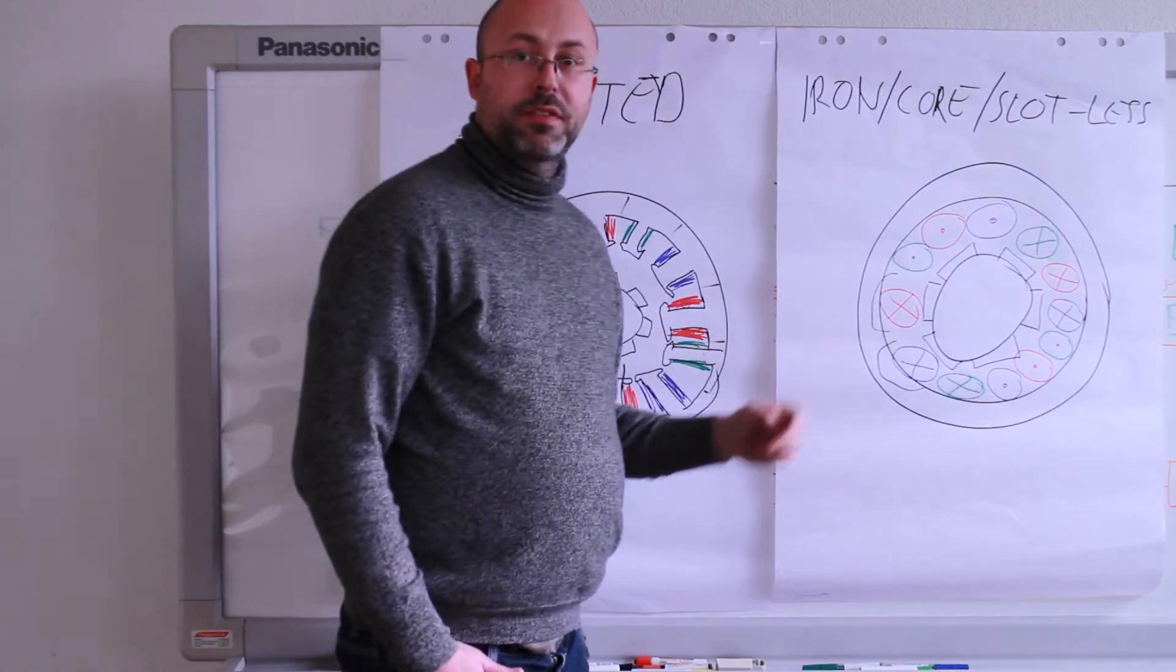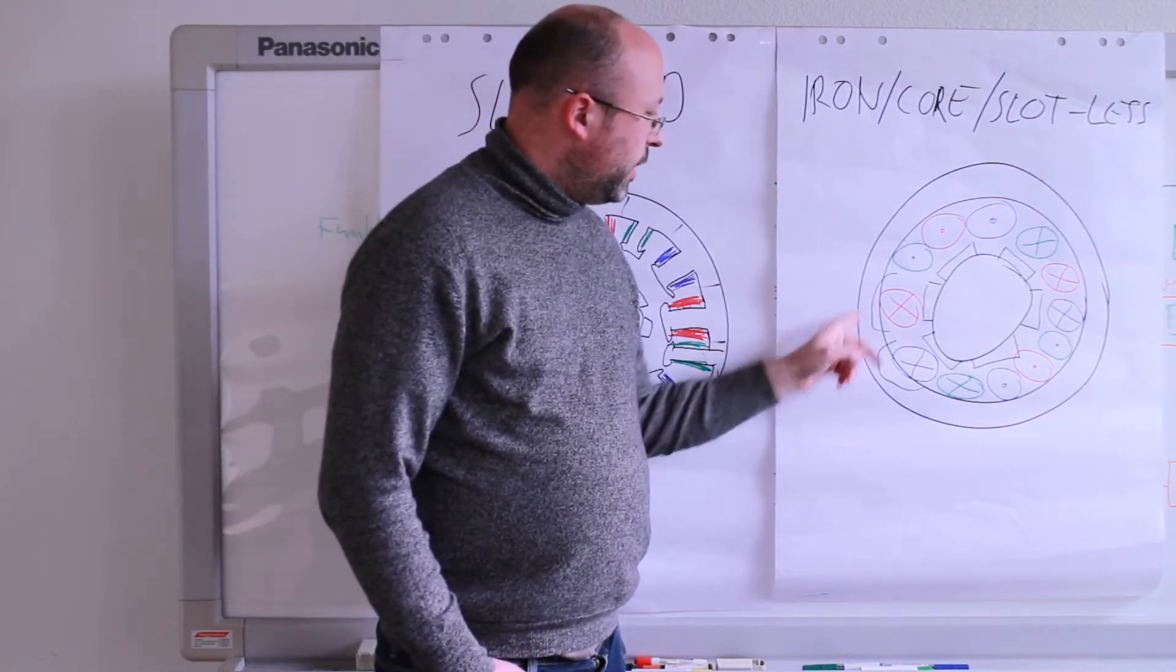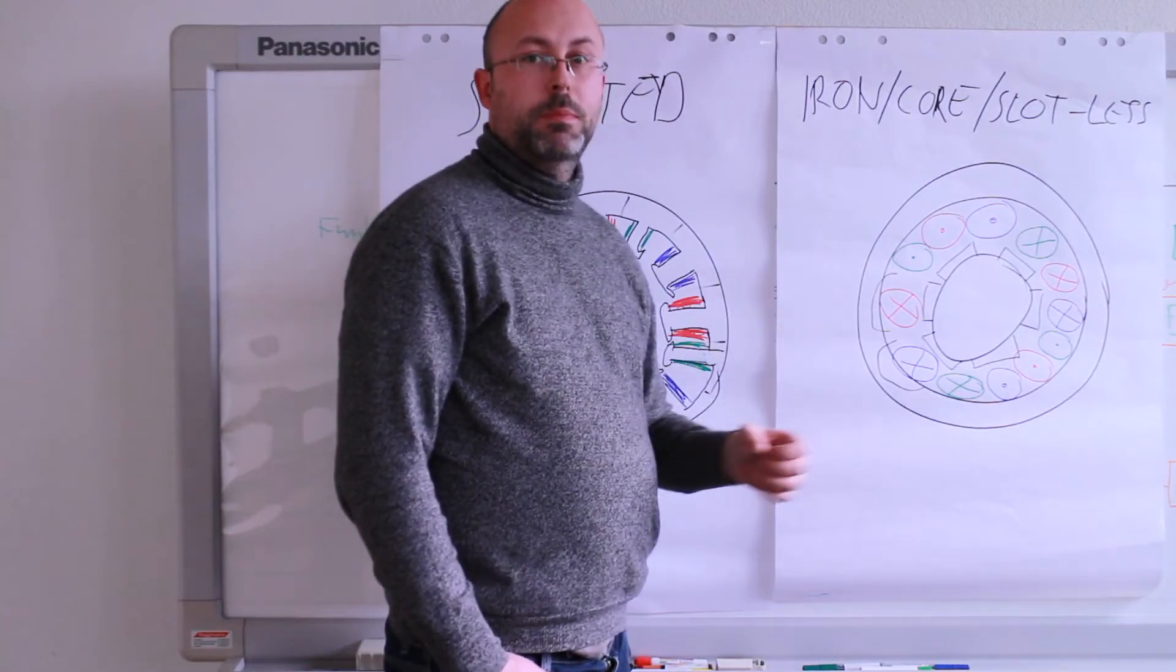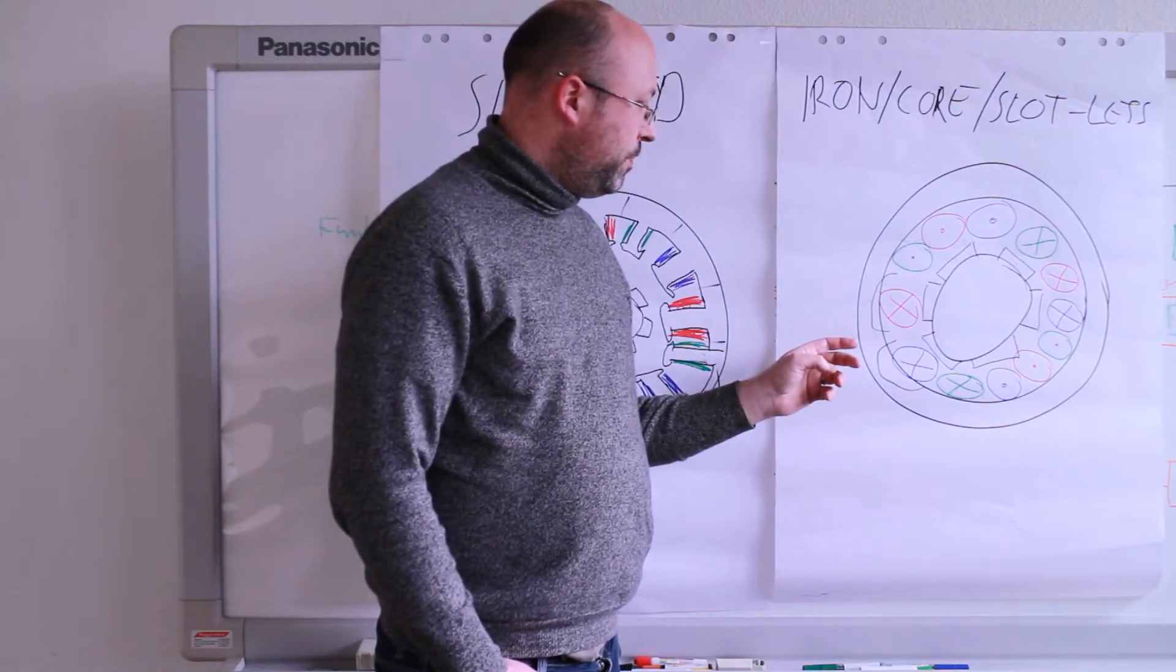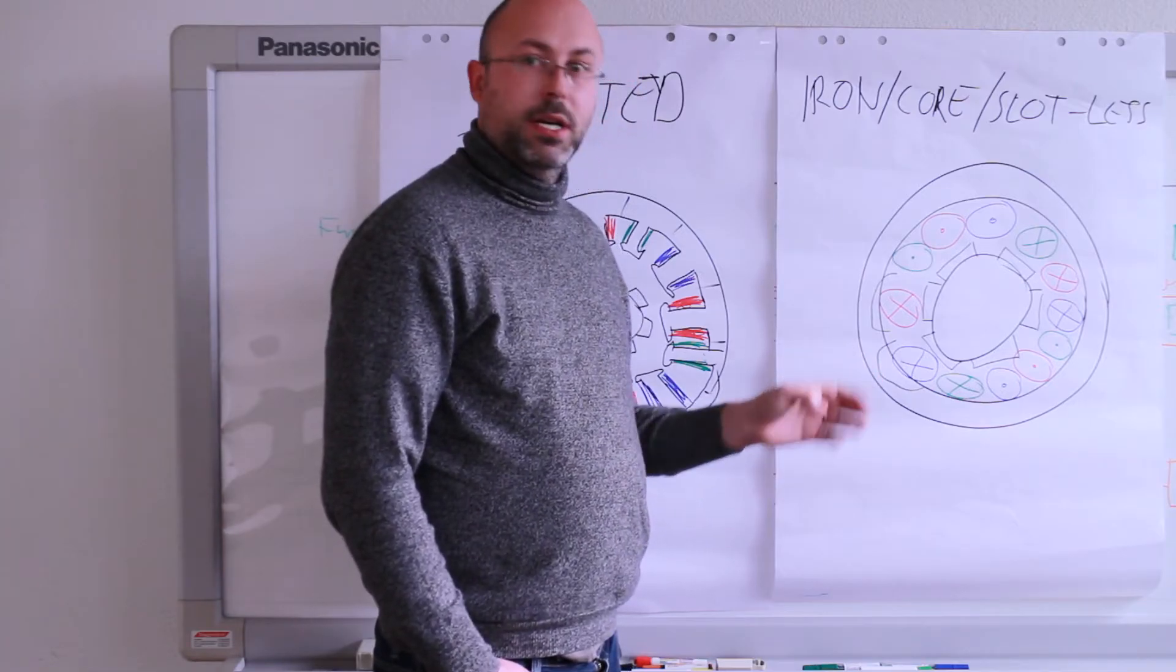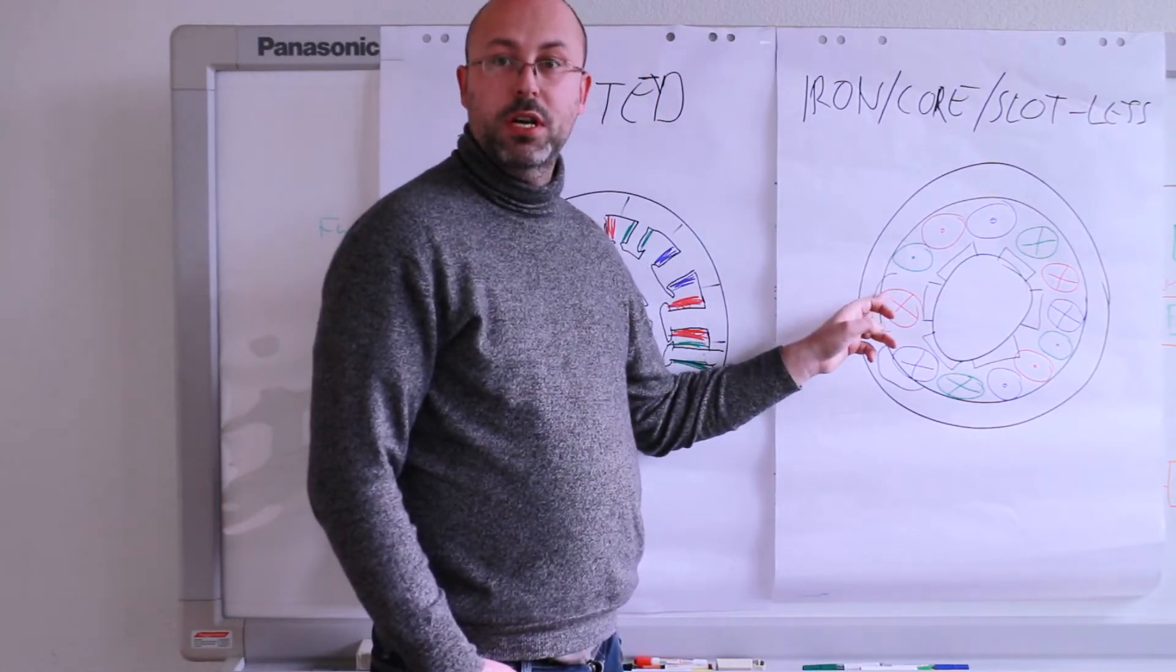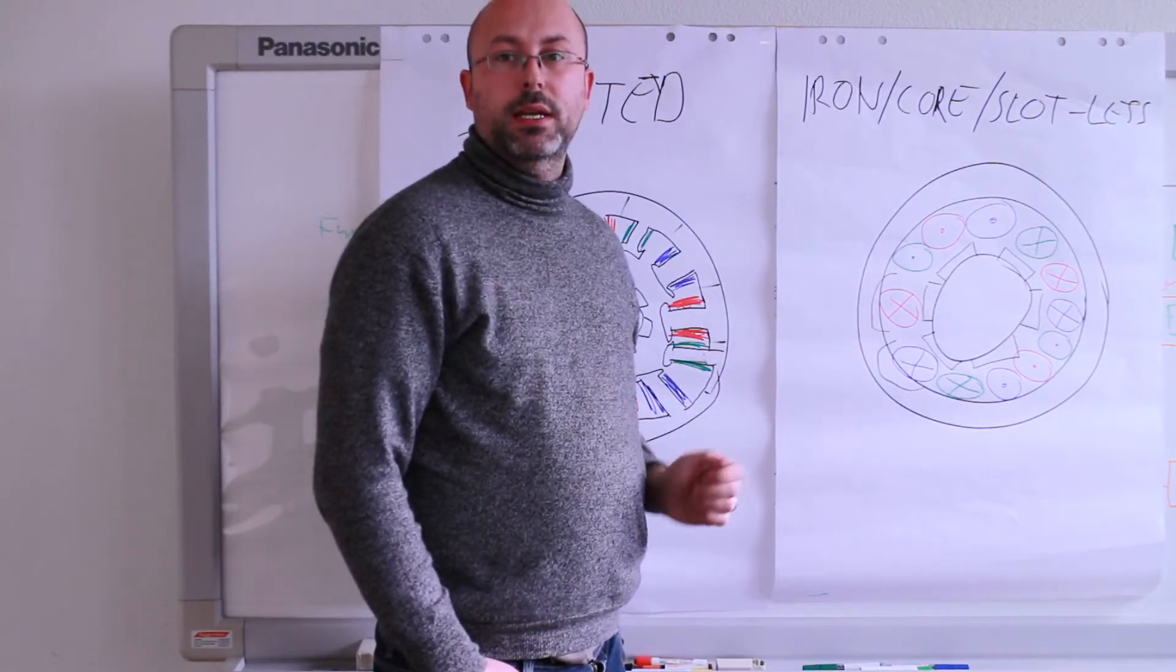The advantage from a manufacturing point of view is that stamping a round piece of sheet metal is way easier. You just get a standard punch, a standard cutting die for punching. If you want to make different sizes of motor and you organize it neatly, you could even cut the next dimension and the next dimension of motor out of the same piece of sheet metal with nearly zero losses.